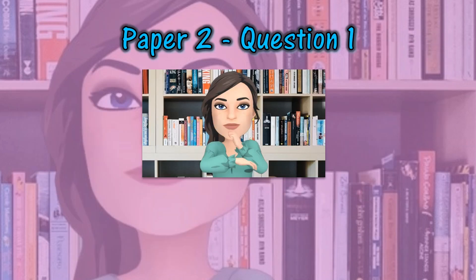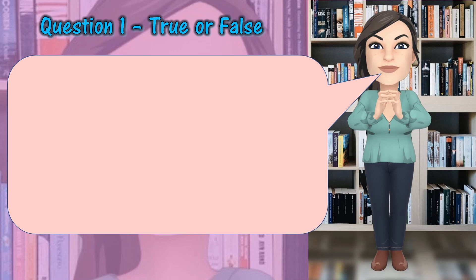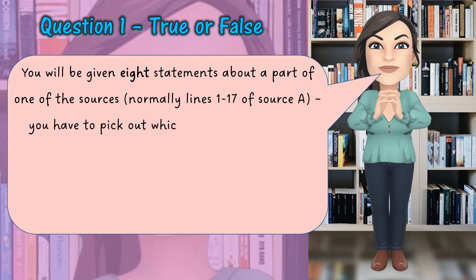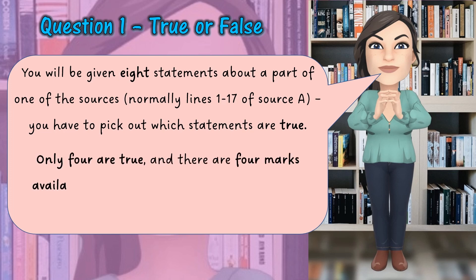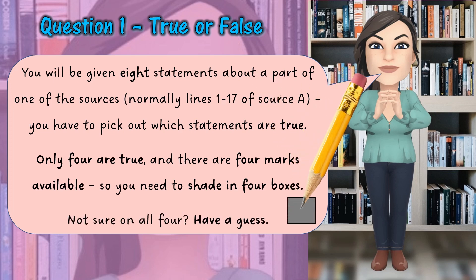Let's look at Paper 2, Question 1: True or False. For this first question you will be given eight statements about a part of one of the sources, normally lines 1 to 17 of Source A. You have to pick out which statements are true. Only four are true and there are four marks available, so you need to shade in four boxes. Not sure on all four? Have a guess — it's not worth leaving it out when you could potentially guess the right answer.